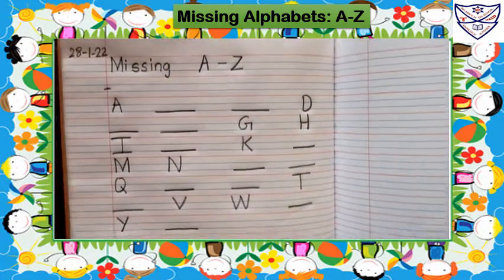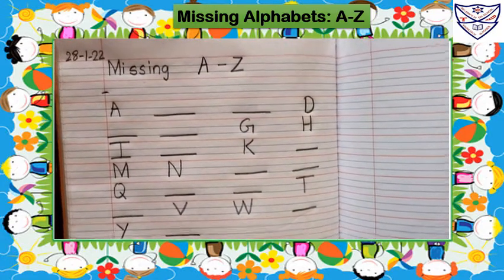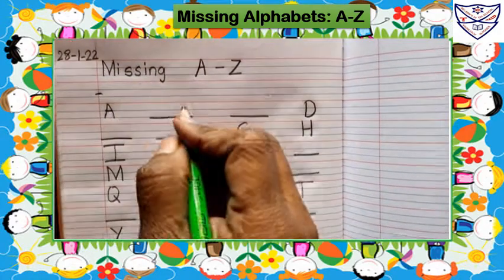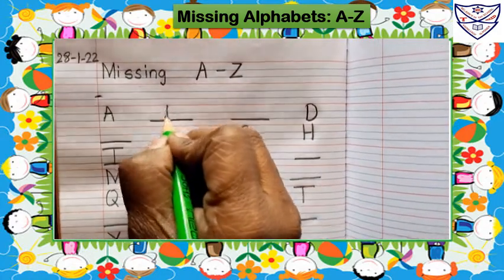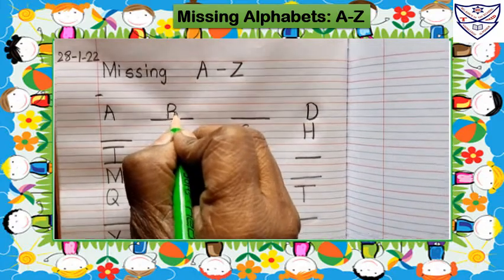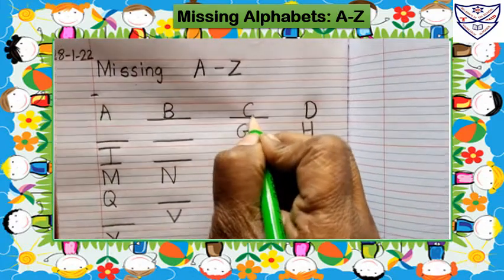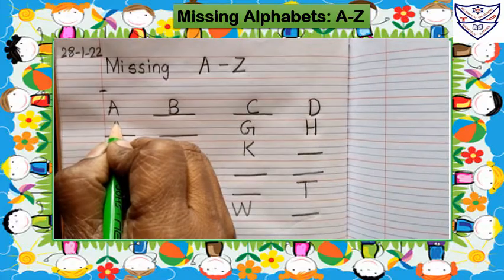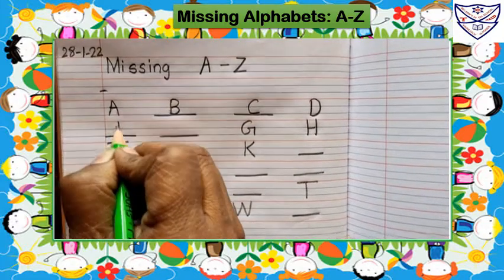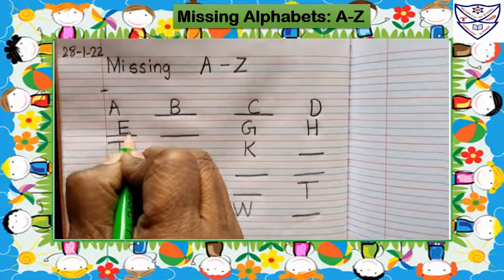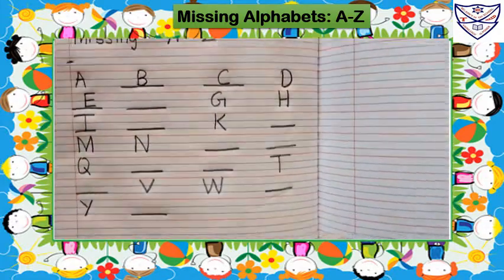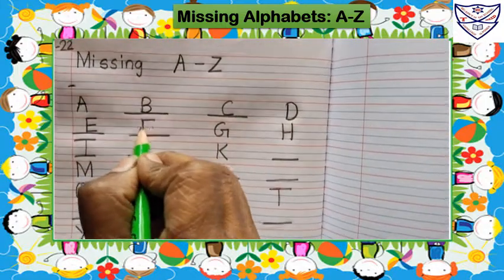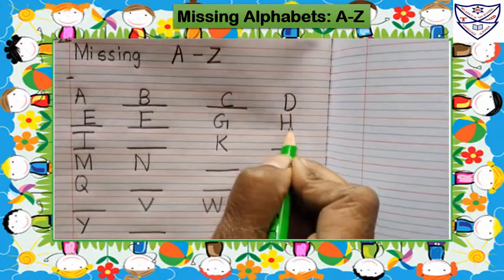Now we will write the missing alphabets. A — after A, which alphabet will come? B. C. C. D. D. E. F.